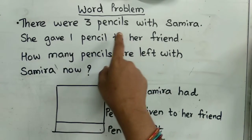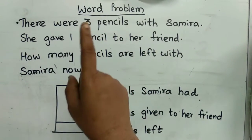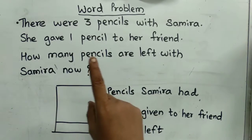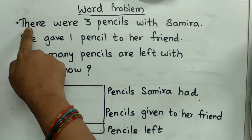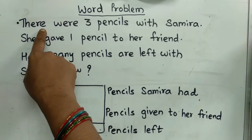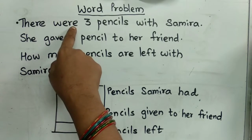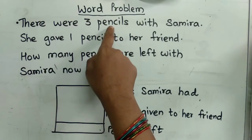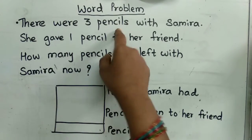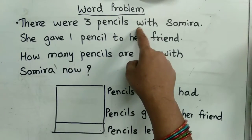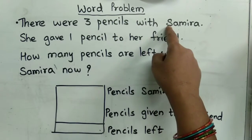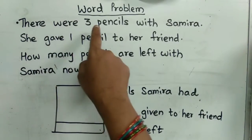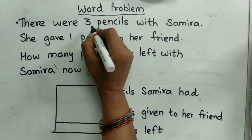Now while reading, which words you can read, read them. Which you cannot read, read the spelling and go to the next one. T-H-E-R-E there. W-E-R-E were. There were three P-E-N-C-I-L-S pencils.